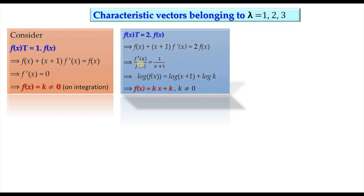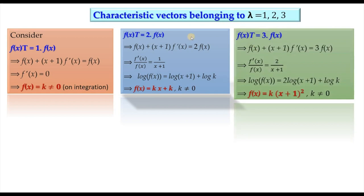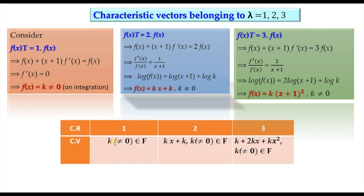For λ = 2, this gives f(x) = k(x+1) = kx + k, where k ≠ 0. For λ = 3, the same procedure gives f(x) = k(x+1)², k ≠ 0. So the characteristic vectors are: for λ=1, any nonzero constant; for λ=2, k(x+1); for λ=3, k(x+1)².